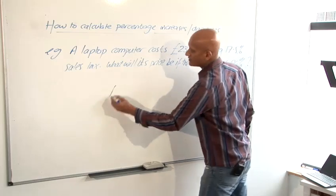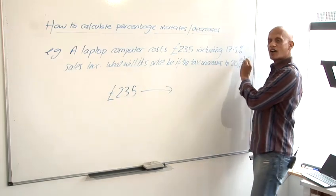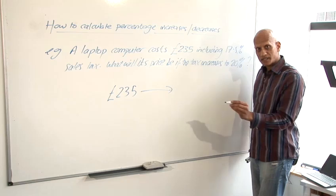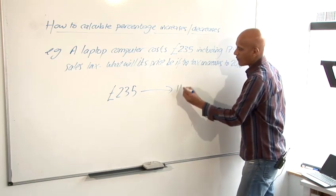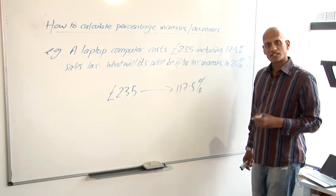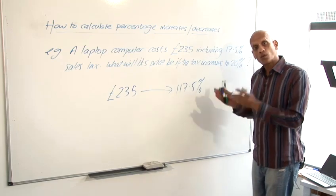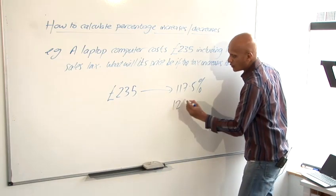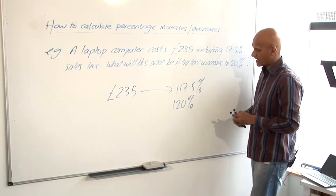So this 235 pounds we know it includes 17.5% tax so it's 100% which is the original price plus the 17.5% tax so it's 117.5%. We want to know the price if the tax rate is 20%, now if the tax rate is 20% you've got the original price and 20% of tax so it's 120% that we want and now it's just a case of applying the scale factor method.